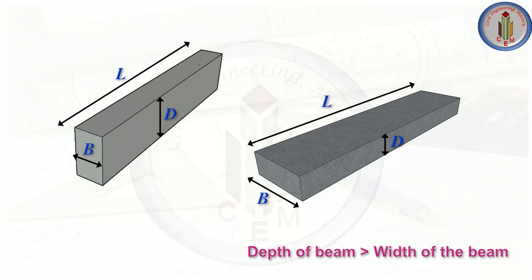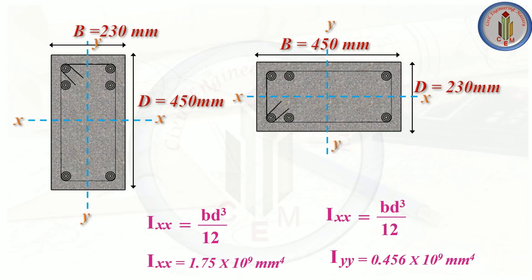It is always good practice to provide depth of the beam greater than the width. The stiffness and rigidity of the beam mainly depends on the moment of inertia of the cross-section. Here we have two cross-sections: one with breadth 230 mm and depth 450 mm, and another with breadth 450 mm and depth 230 mm.